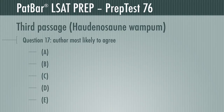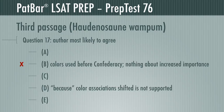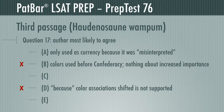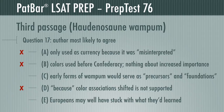Question 17 wants the response to which the author would most likely agree. Many people get this one wrong because the correct answer has peripheral support at best. B directly contradicts the passage — the author presents the use of colored beads before the Confederacy and nothing suggesting those colors became more important. The passage says nothing about associations with colors shifting over time, so D is incorrect. A doesn't make sense from the author's standpoint, which makes clear that arriving Europeans misinterpreted the purpose of wampum. To suggest that it would have become money anyway is a non sequitur. That leaves us with C and E.